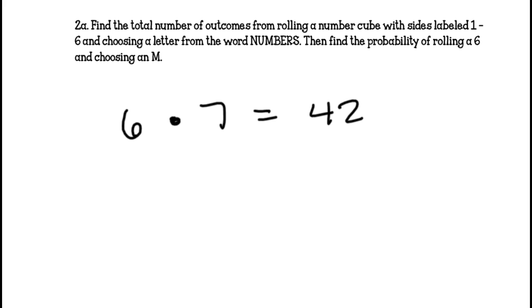Then find the probability of rolling a 6 and choosing an M. There's only one outcome that would result in a 6 and an M together. So your probability of getting a 6 and an M is 1/42. You circle it and that's your answer.